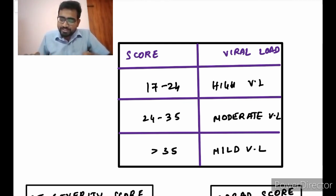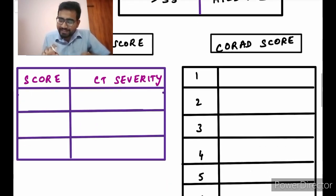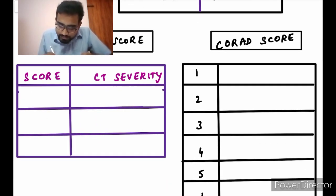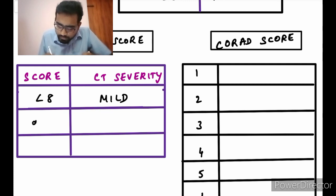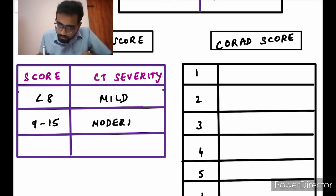Coming to CT severity score — looking at HRCT — if the score is less than 8 then the severity is mild; if the score is 9 to 15 then it is moderate; if the score is more than 15 then that is severe.